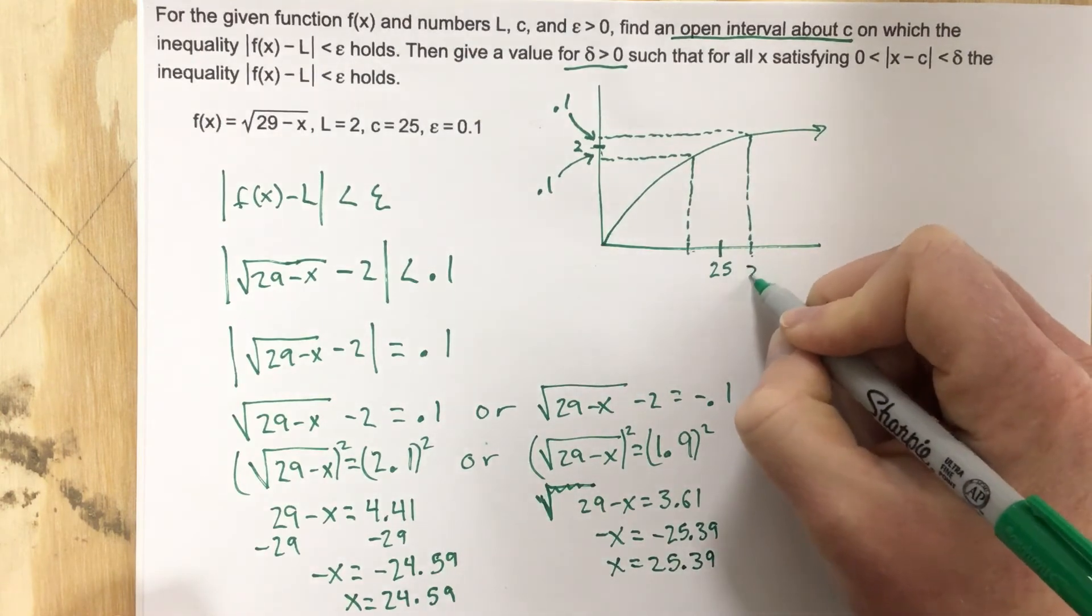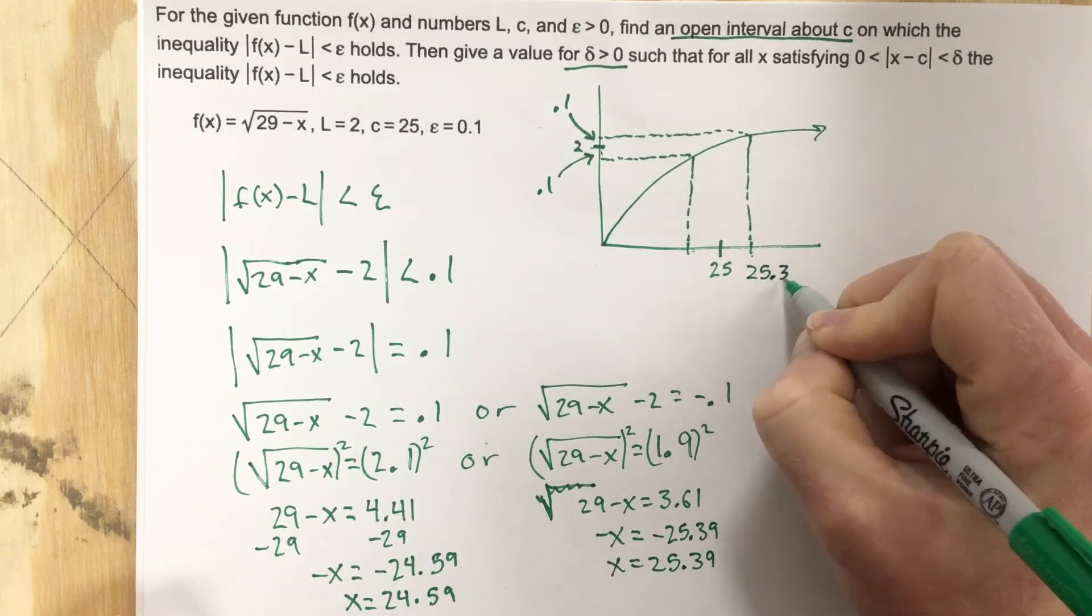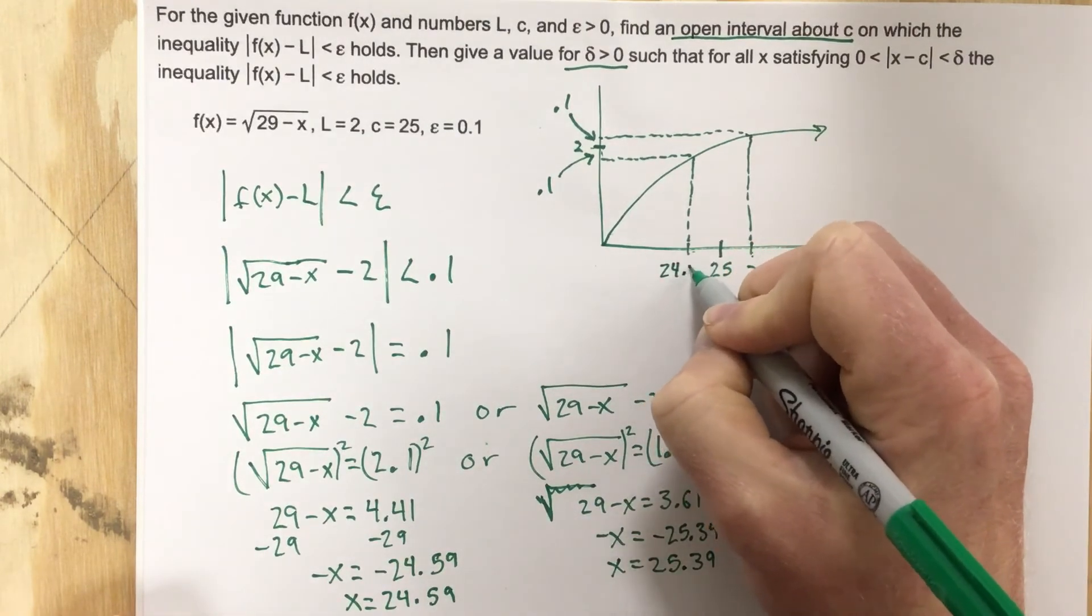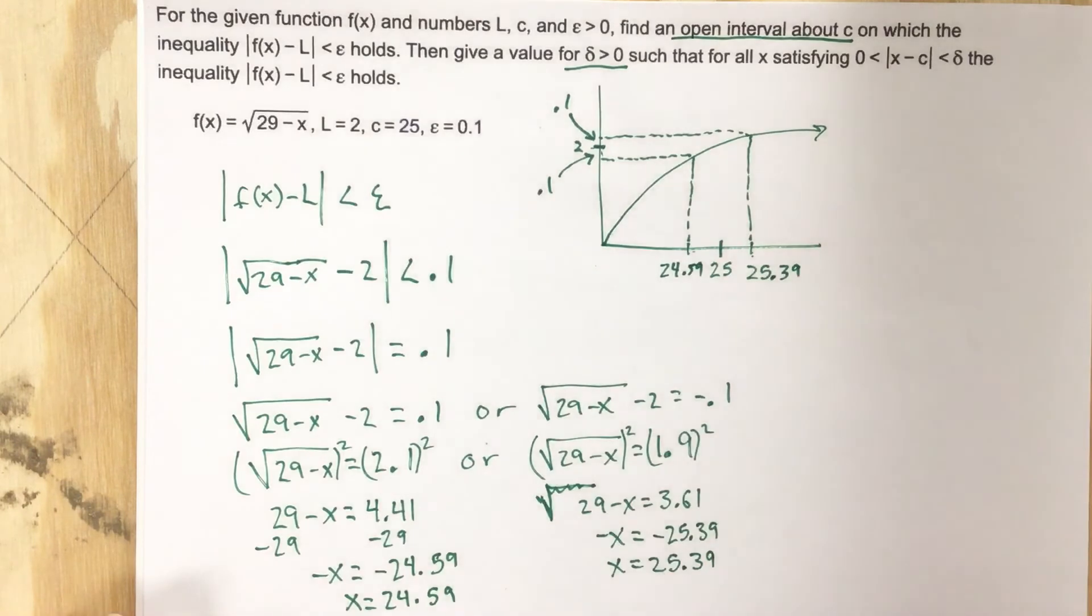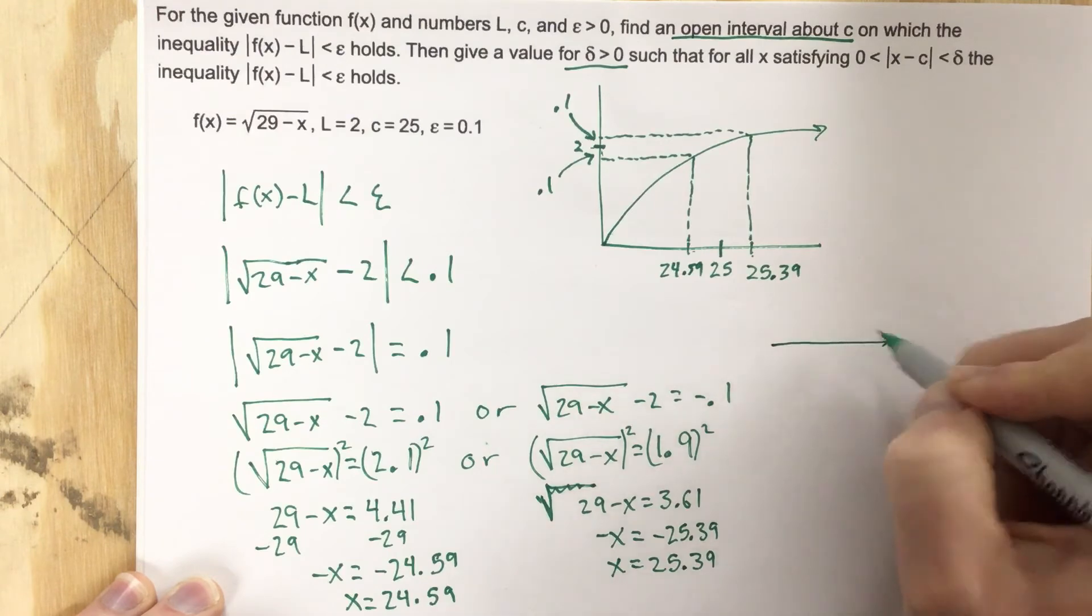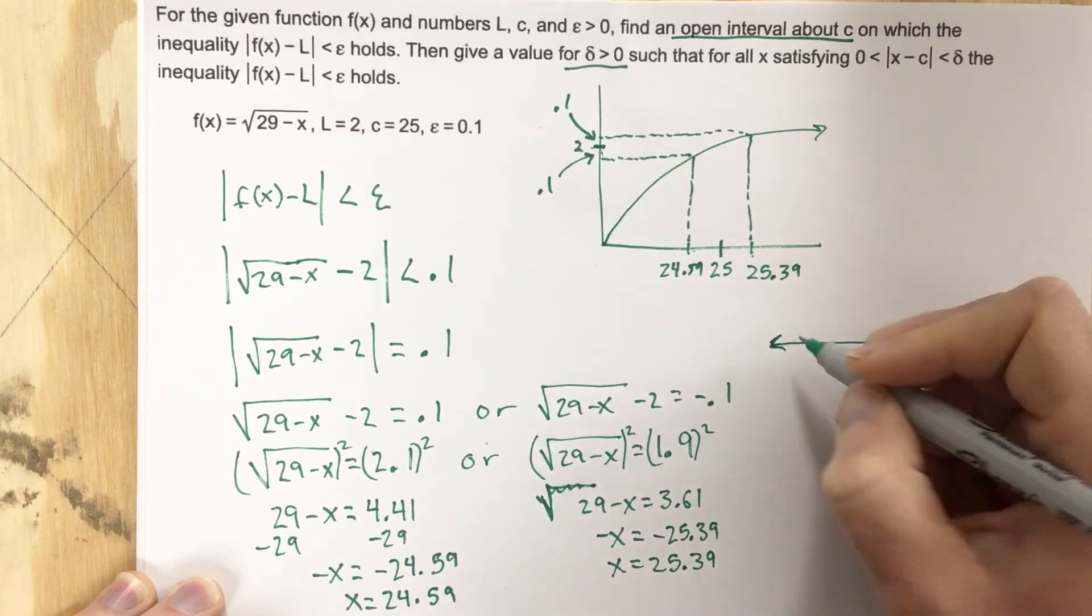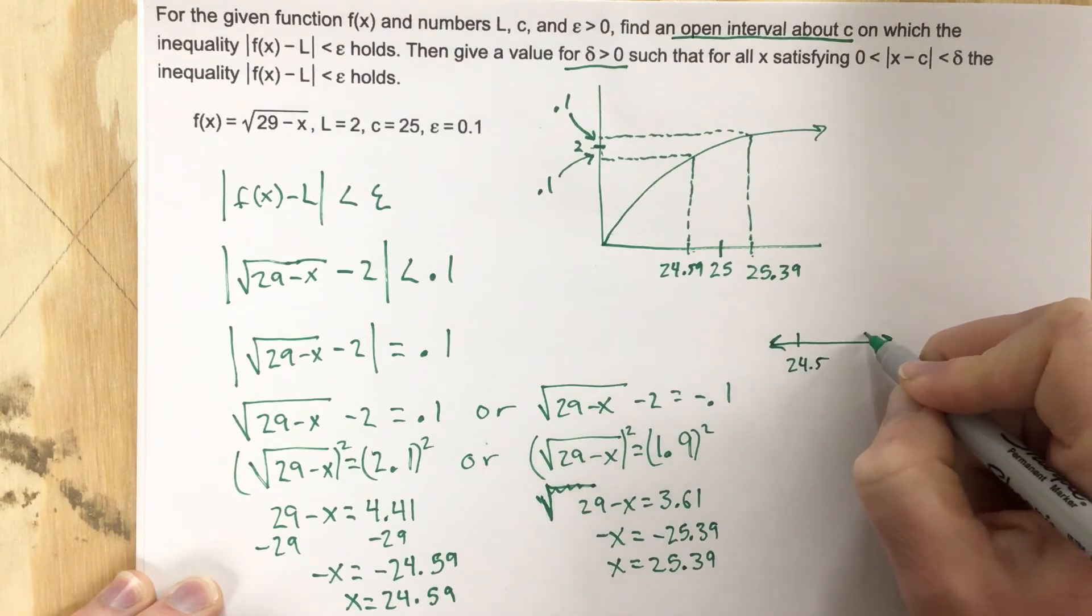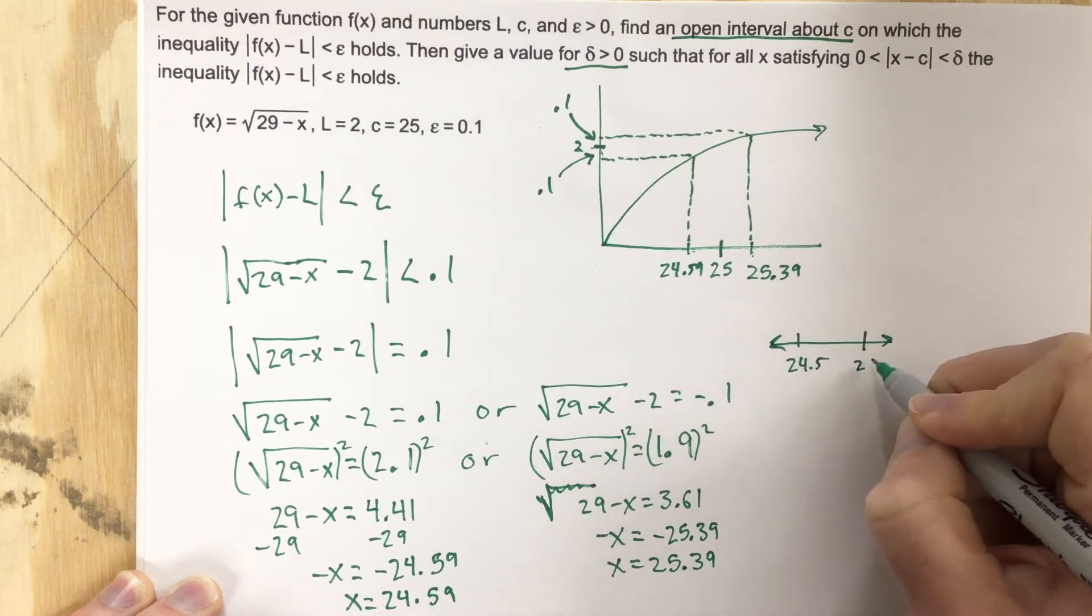So we've got 25.39 here, and we have 24.59 here. Now, if we drew, typically with an inequality, we're going to draw the number line, mark 24.59 and 25.39,